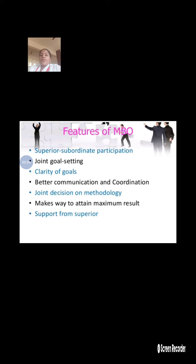The next topic is features of MBO. The features include superior and subordinate participation and joint goal setting — defining common goals and individual goals, and connecting them jointly to achieve targets. Another feature is clarity of goals: providing proper information about goals and what activities are needed to achieve the work.